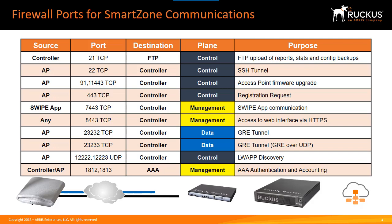Before closing, it's important to review the ports and protocols used for communications between APs and controllers — especially if APs are outside a firewall and you need to open ports. There are many control protocols for uploading reports, stats, configuration backups, SSH tunnels, firmware upgrades, and registration requests. Management ports and data plane ports are also required. Pause the presentation to review this chart and note all default ports used between APs and controllers if a firewall sits between them.